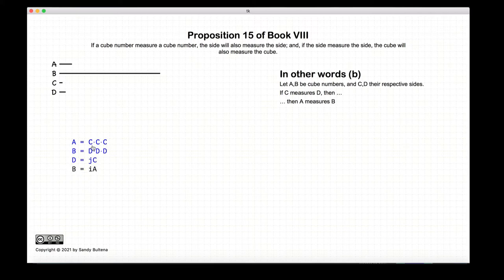So basically they're two propositions but they're flip sides of the same coin. If c measures d then a measures b, or inversely if a measures b, c measures d.